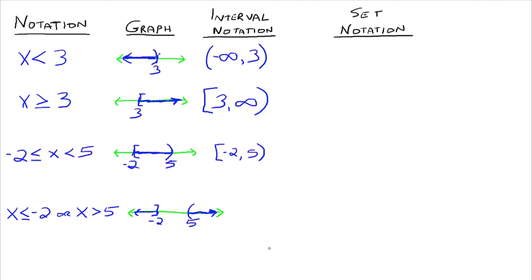With an 'or' compound inequality, we have two intervals. We write both: the first interval is negative infinity to negative 2 included — (-∞, -2] — and the second interval is (5, ∞). We join them with a 'U' without a tail, which stands for union. Union is the mathematical version of 'or.' So this reads: any number in the interval negative infinity to negative 2, or any number greater than 5. Whenever you join intervals with an 'or,' you use this union symbol.